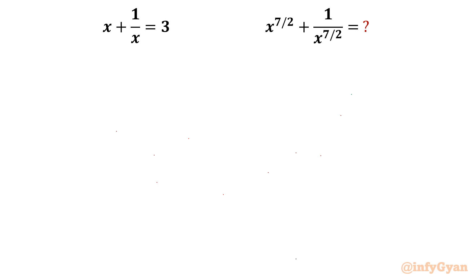Hello family Infigyan, welcome once again in this very exciting video of algebraic challenging equations where we are going to solve one very interesting reciprocal equation problem. The problem is: x plus 1 over x equals 3, and we have to find the value of x power 7 over 2 plus 1 over x power 7 over 2.